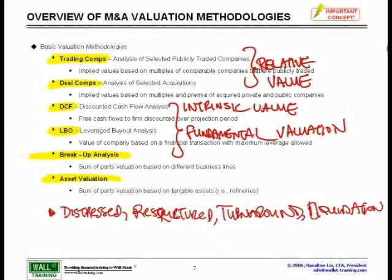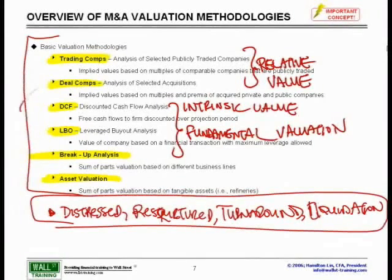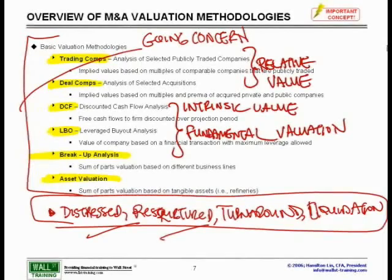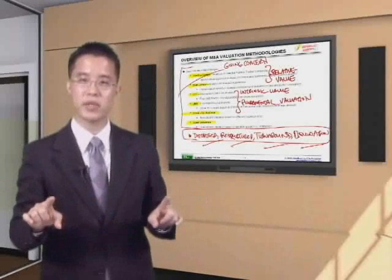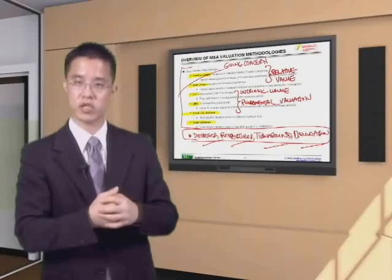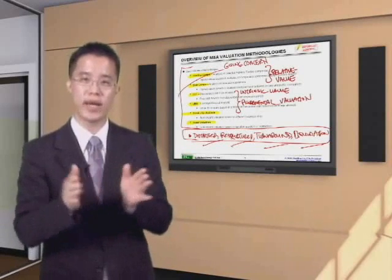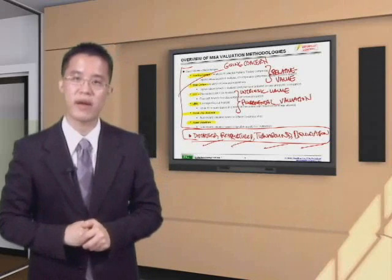Each one of these — distressed, restructuring, turnaround, or liquidation — are not on this slide for a specific reason. What we are trying to value is the value of the company as a going concern: steady run rate, they will be around, they are not in any financial trouble, not distressed, not in a restructuring situation, not in a turnaround mode, and not in liquidation or bankruptcy. Just keep in mind that there is an entirely separate discussion on how to value distressed and restructured companies. For this particular module, we will focus on an ongoing run rate, current valuation of a firm, and apply each of these valuation methodologies to that firm.